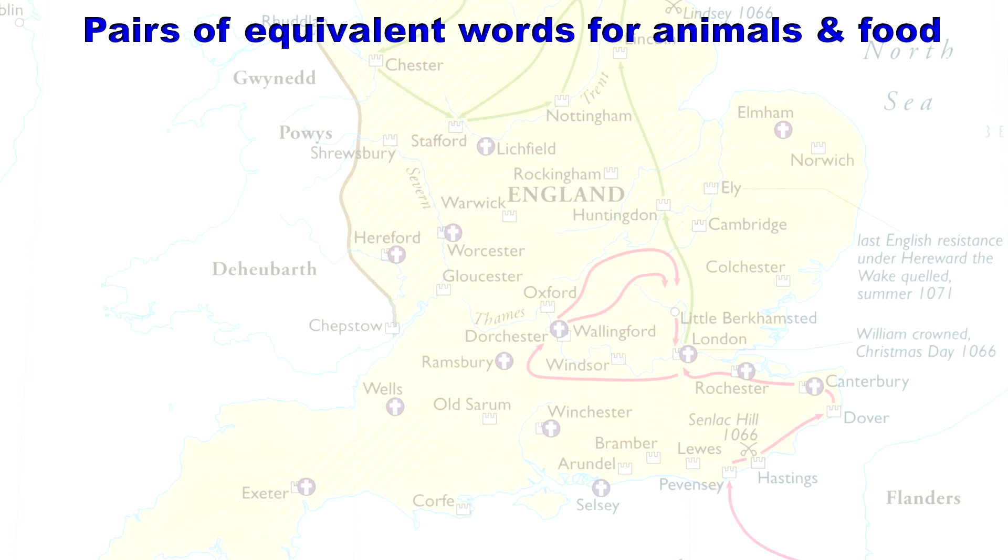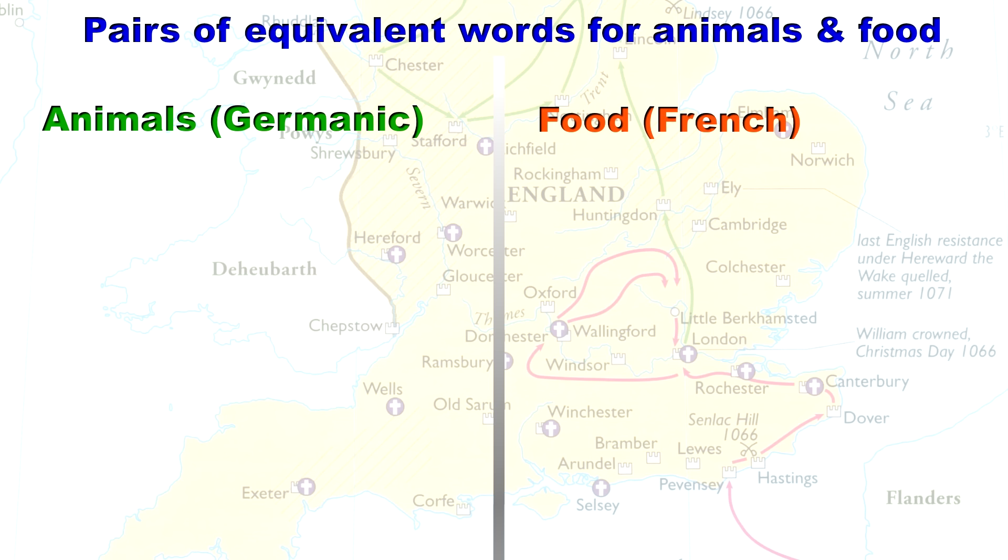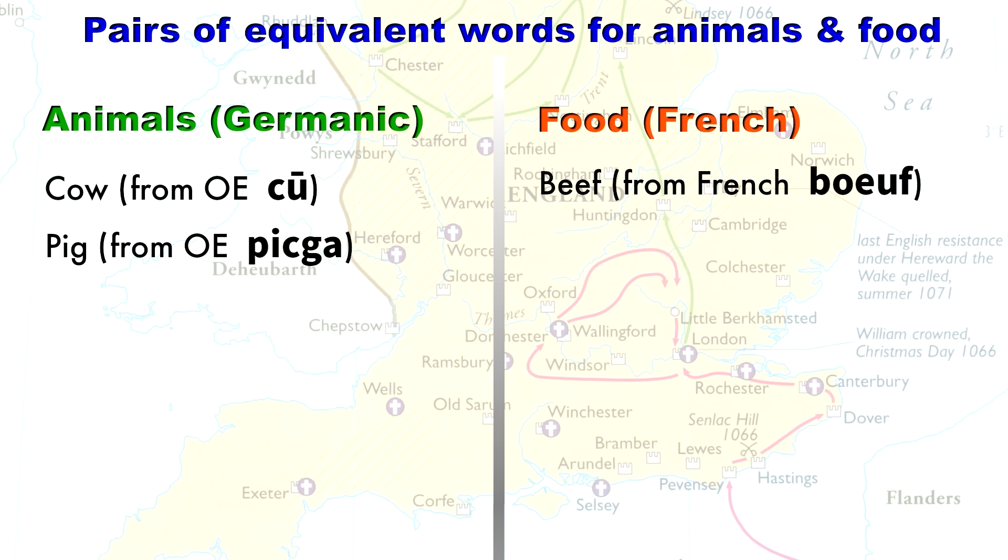An interesting example are the pairs of words representing animals versus foods that come from those animals. The animals are represented by Germanic words, and the foods are represented by French loanwords. For example, cow comes from Old English coup, but beef comes from French boeuf. Pig comes from Old English pigga, but pork comes from French pork.